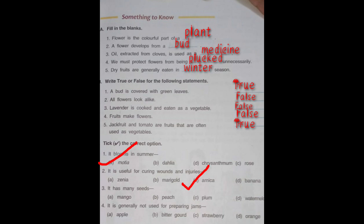Number three: It has many seeds. Which fruit has the most seeds? The options are mango, peach, plum, and watermelon. Watermelon is the fruit that has many seeds in it; the others have only one seed each.